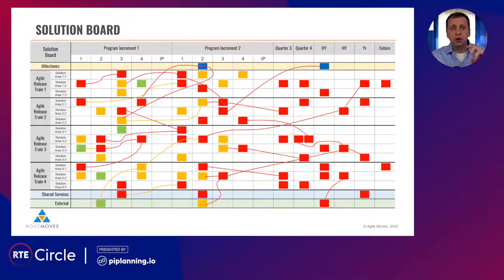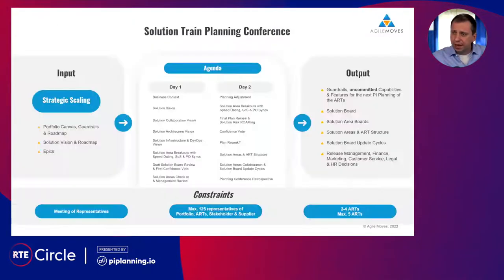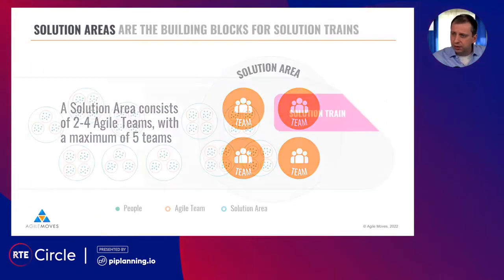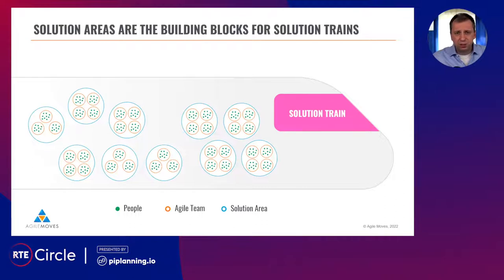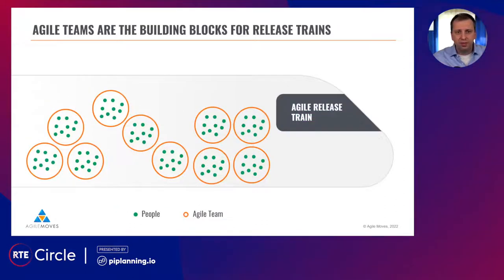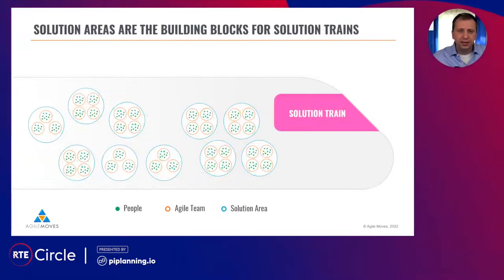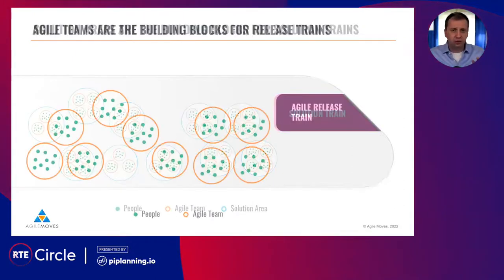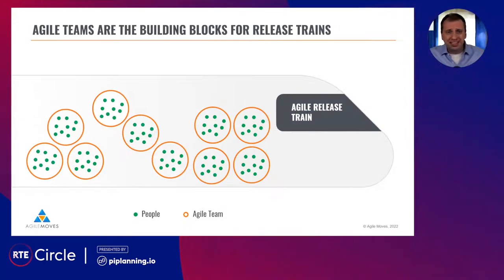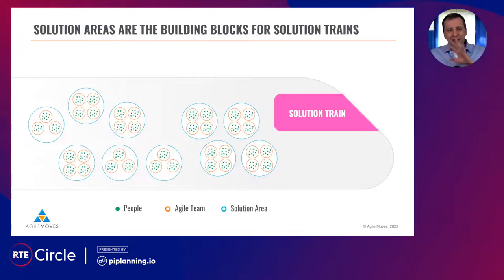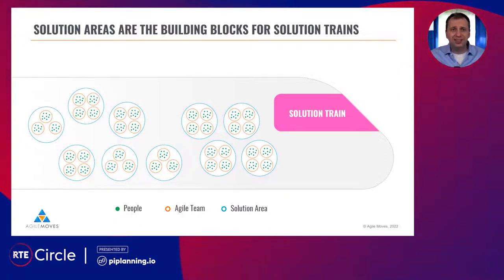So this is what we are doing: setting up solution trains with the help of solution areas and setting up planning conferences, creating agile solution boards. Now, if you look at a solution train with solution areas and a release train with agile teams, you see the self-similarity. We are scaling up the building blocks — just as an agile release train has maybe 10 agile teams as building blocks, a solution train has maybe 10 solution areas as building blocks. This is usually easier to manage.